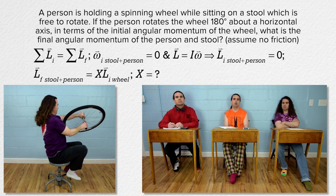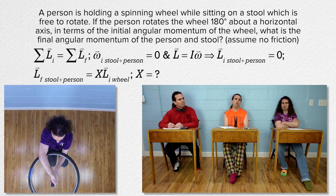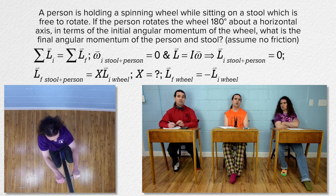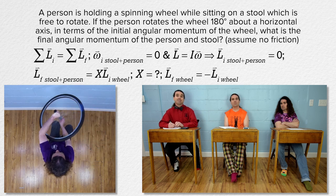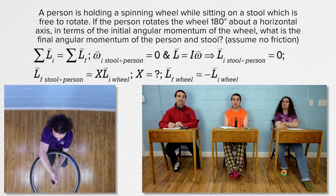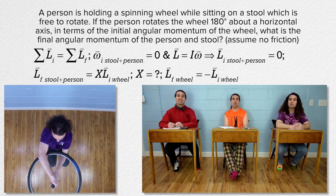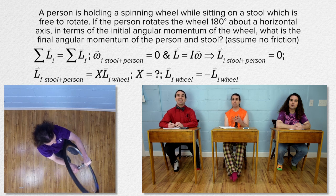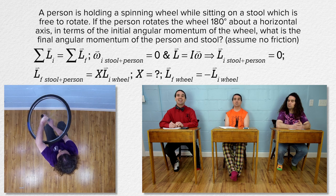You did not do anything with the fact that the wheel is rotated by 180 degrees. That means the final angular momentum of the wheel equals the negative of the initial angular momentum of the wheel. The final angular momentum of the wheel will have the same magnitude because nothing will be slowing it down. However, its angular momentum will be opposite in direction from where it started, which is why the negative is there.